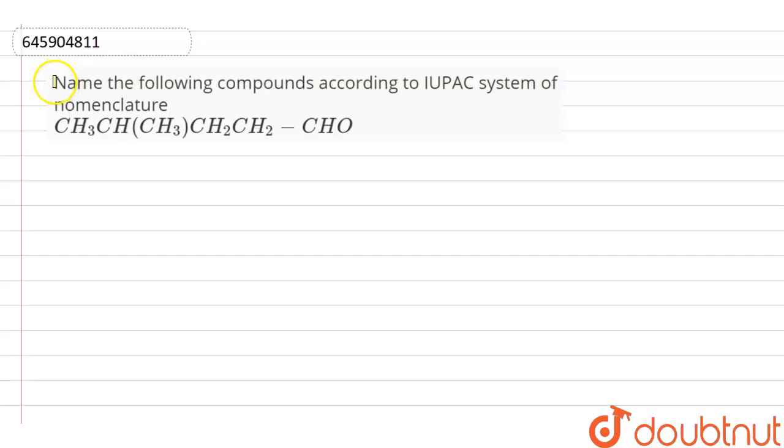Here is the question in which name the following compounds according to IUPAC system of nomenclature and that is CH3CHCH3CH2CH2CH2. Now,